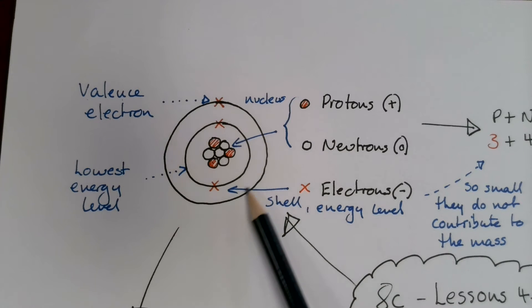The electrons that we find in the outer shell are called the valence electrons.